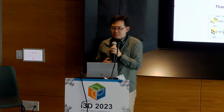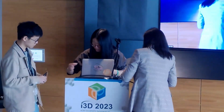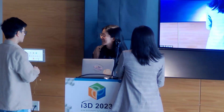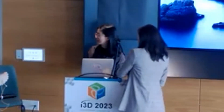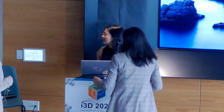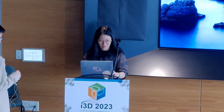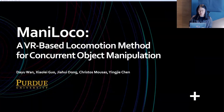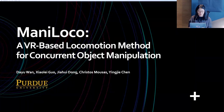Let's thank our speakers. The third paper in the session is titled Manny Loco: A VR-based Locomotion Method for Concurrent Object Manipulation. The authors are Dayu Wan, Xiaolei Gao who is presenting, Xiaolei Dan, Christos Musas, and Lingjie Chen. Hello everyone, my name is Xiaolei Guo, I'm from Purdue University. The first author cannot be here today, so I will present our study.